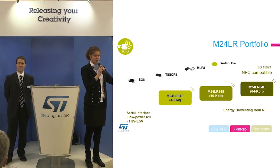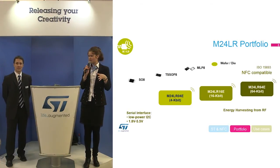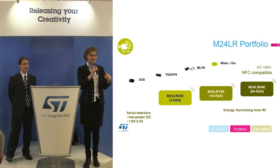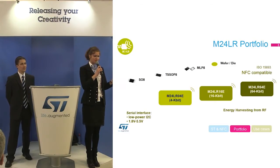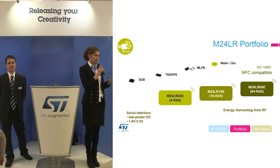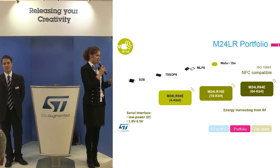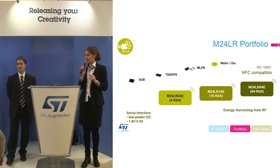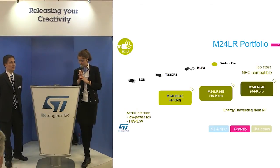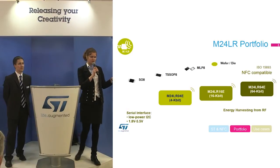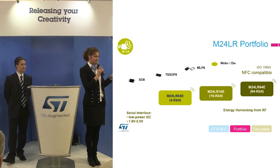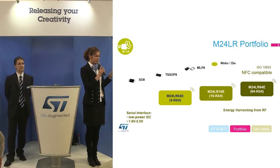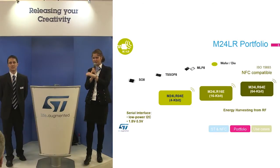There is also an energy harvesting function, meaning the component harvests the extra energy from the RF field that is not needed — and can supply it to other components such as a microcontroller, a temperature sensor, or an LCD screen. The voltage on this pin is between 1.8 and 5.8 volts. All these components are passive, meaning you can still access them even if your device is not powered — very useful for manufacturing lines.